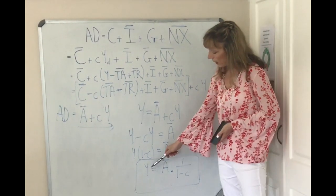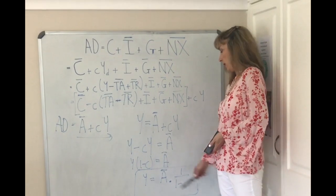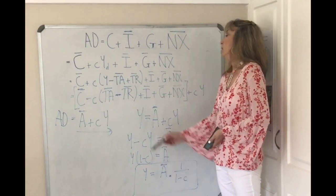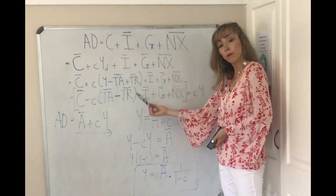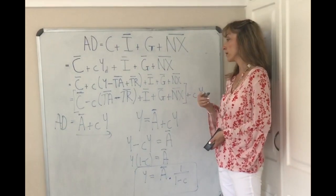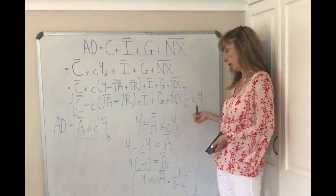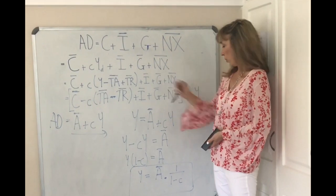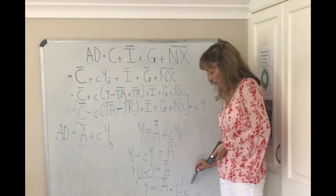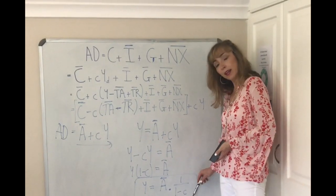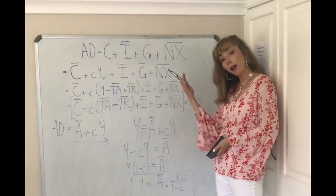The multiplier shows you that if you want to increase income in your economy, there are two ways to do it: either by raising autonomous spending through any of its components — raising transfer payments, raising autonomous investment, government expenditure, or net exports — or by lowering your autonomous taxes.